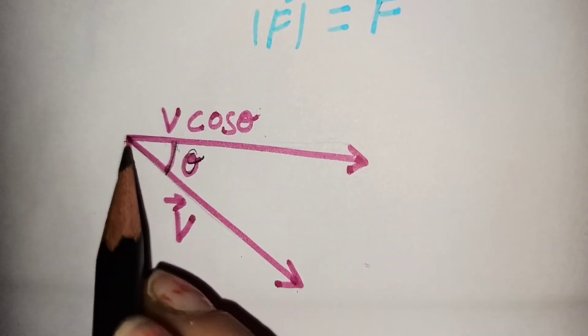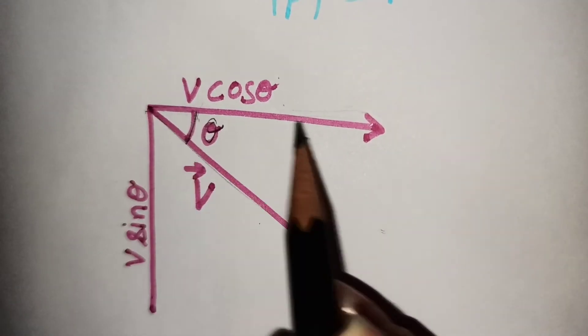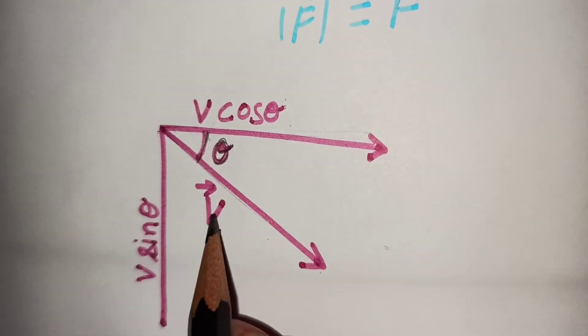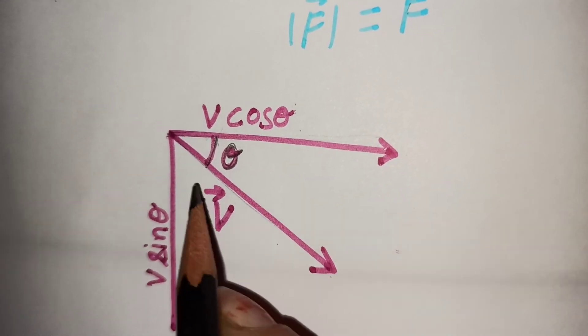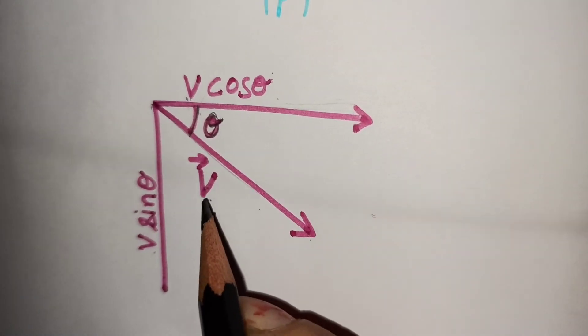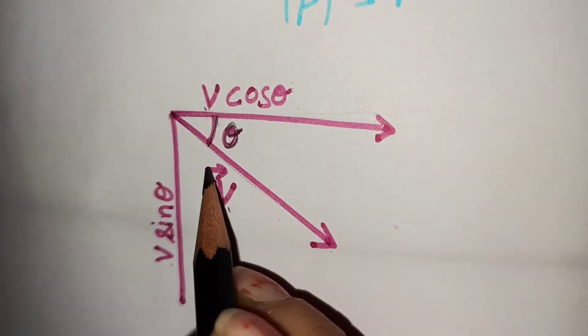The horizontal component is v cos theta and this theta is the angle made by this vector v with the horizontal axis and this is v sine theta where v is the magnitude of this vector. In this way, we can find components of any vector.